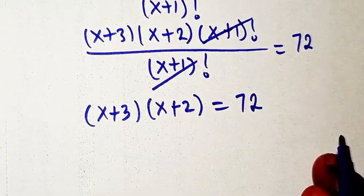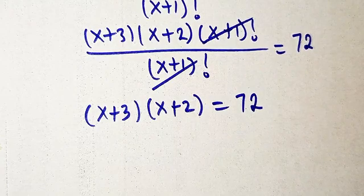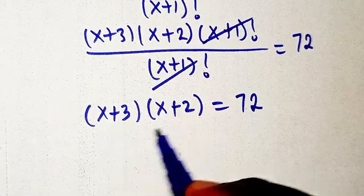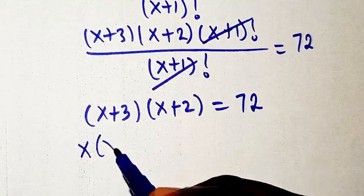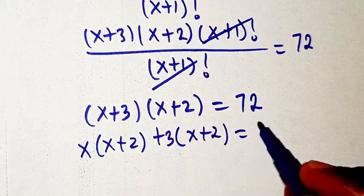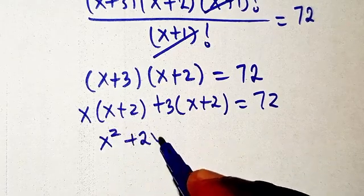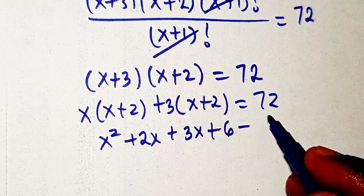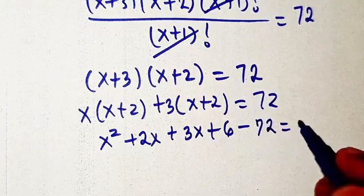We have x plus three times x plus two equals 72. This is a factored form of an equation. So we open the brackets: x multiplies x plus two, and three multiplies x plus two. That gives us x squared plus 2x plus 3x plus 6 equals 72. We transpose 72 to the left-hand side.